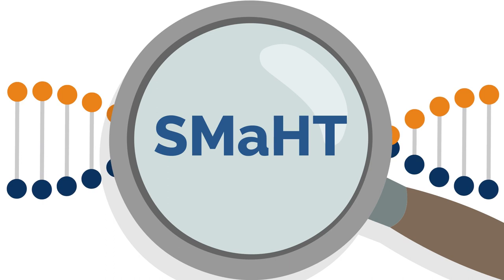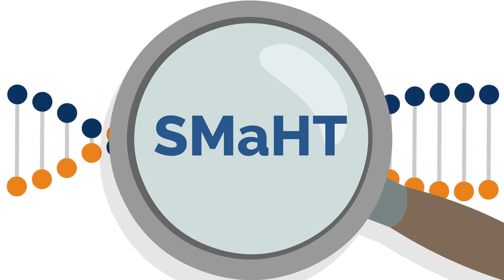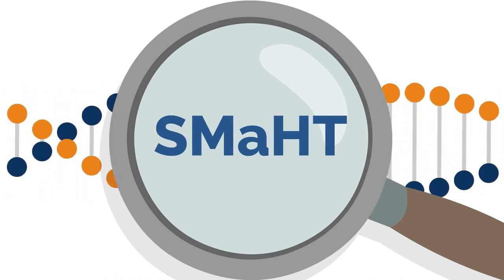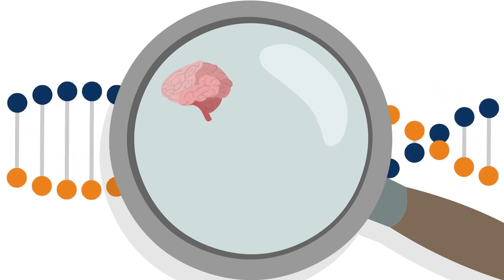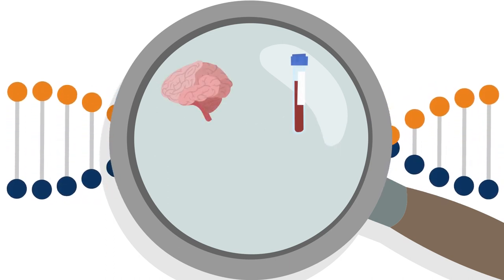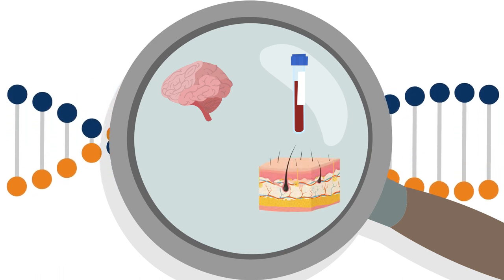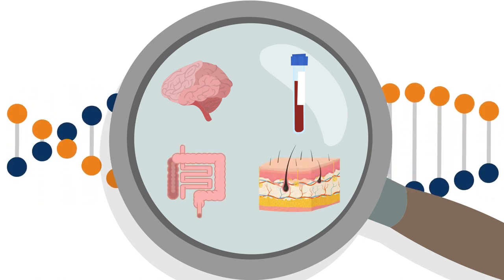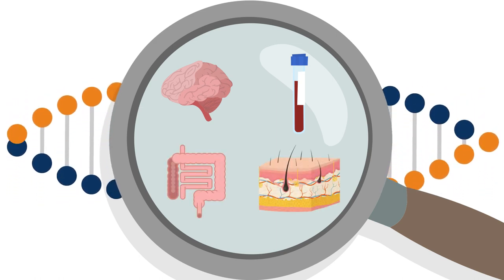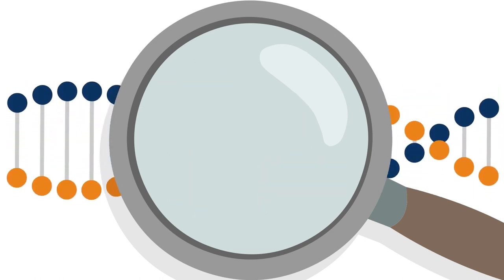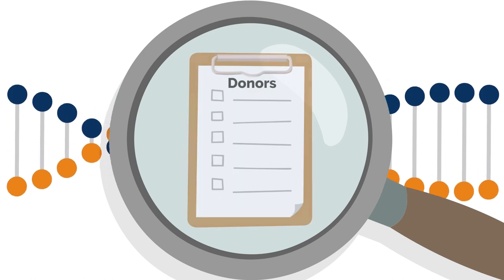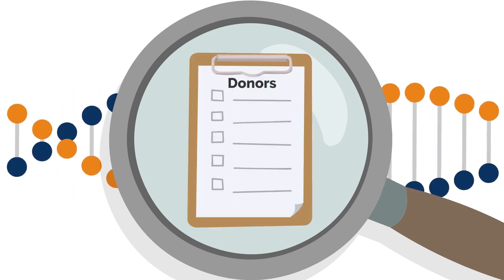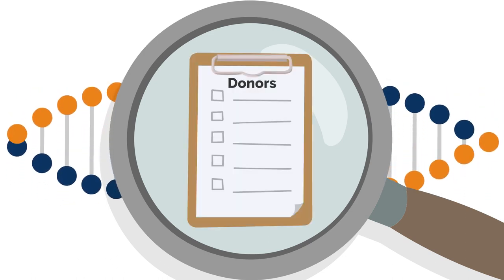the SMAHТ Network plans to identify somatic mosaicism in tissues from the brain, blood, skin, colon, and other places throughout the body from a diverse group of approximately 150 human donors.